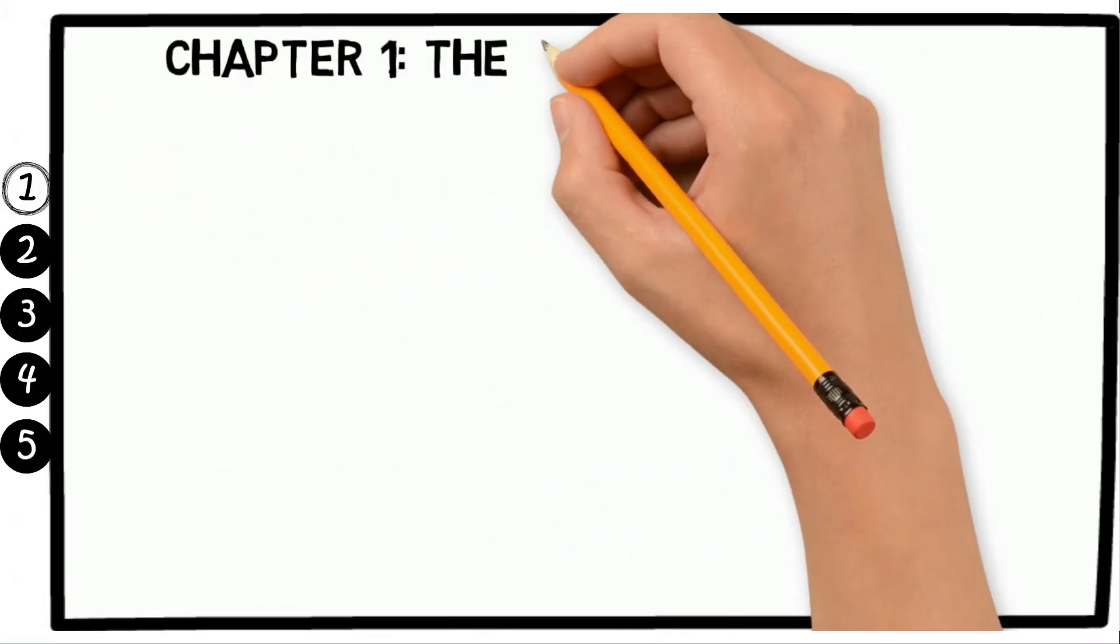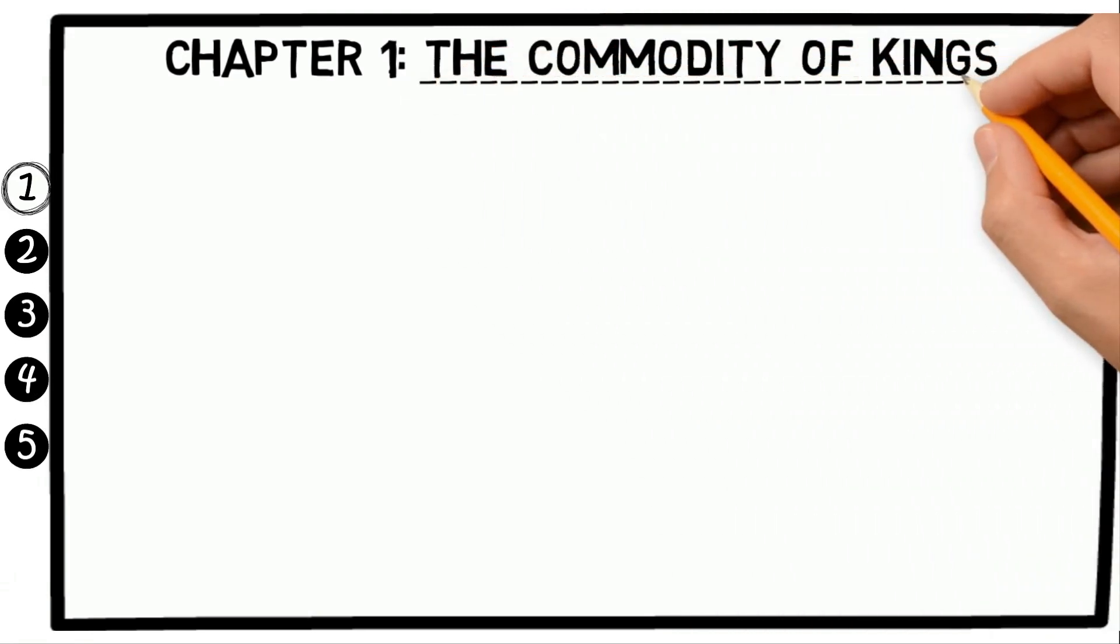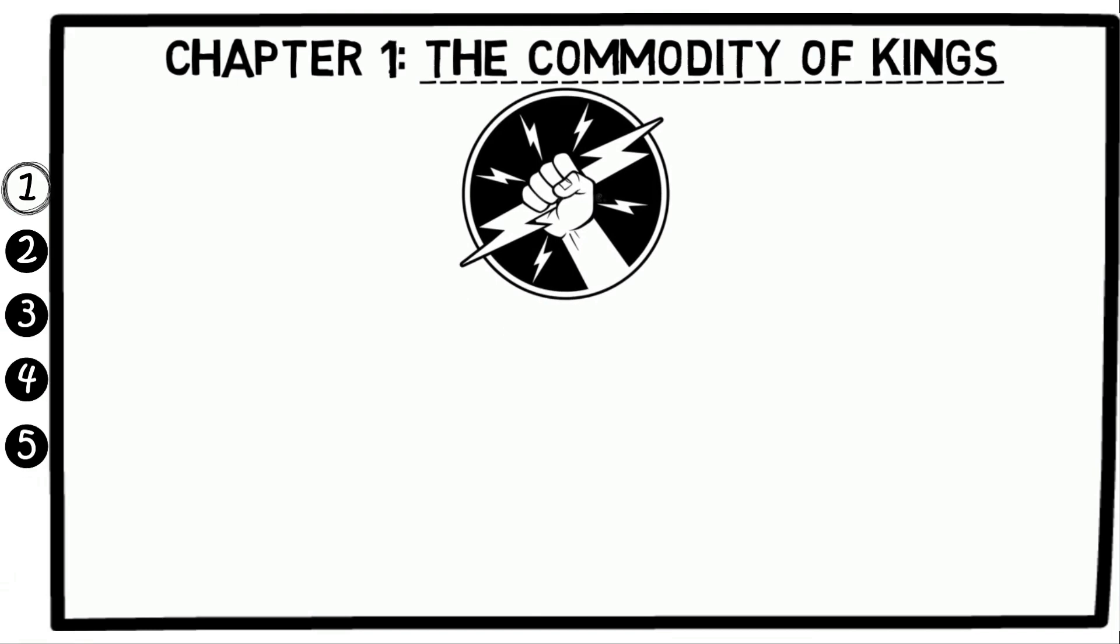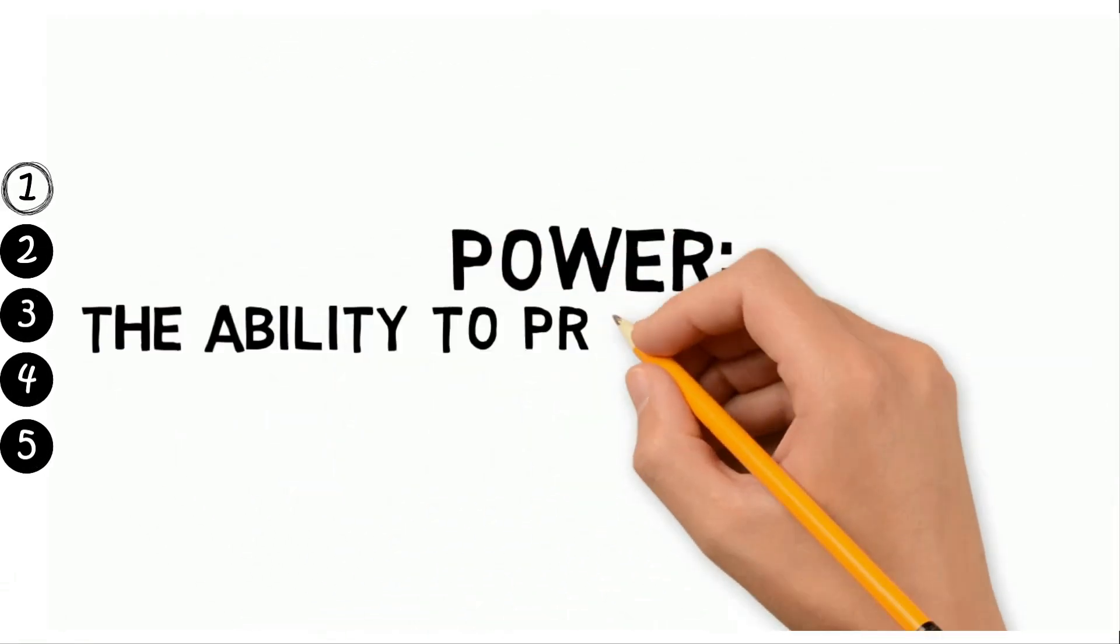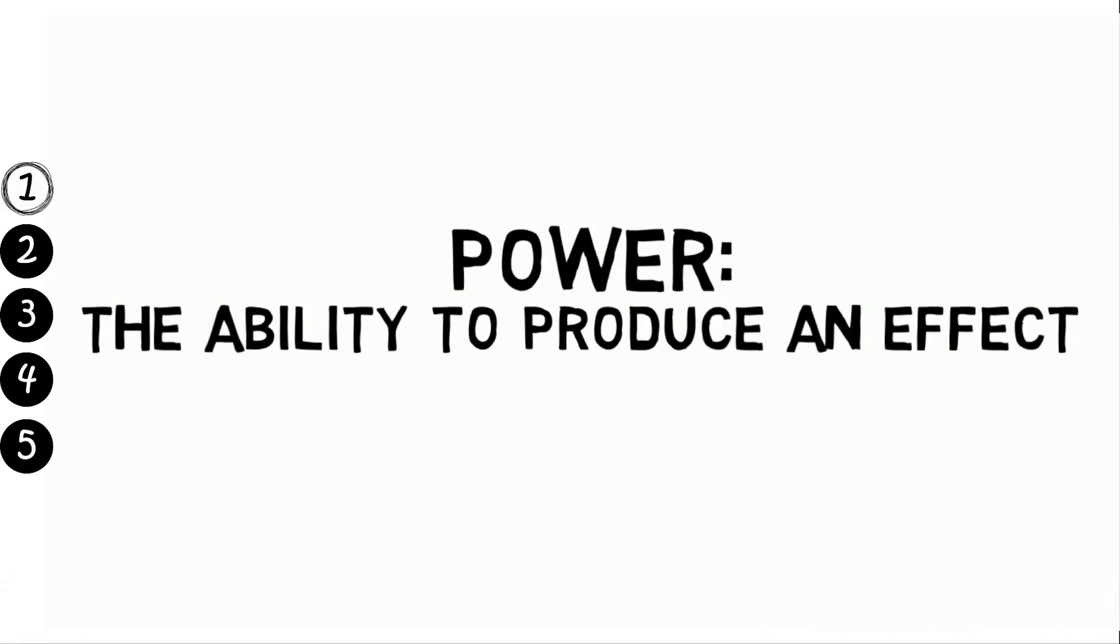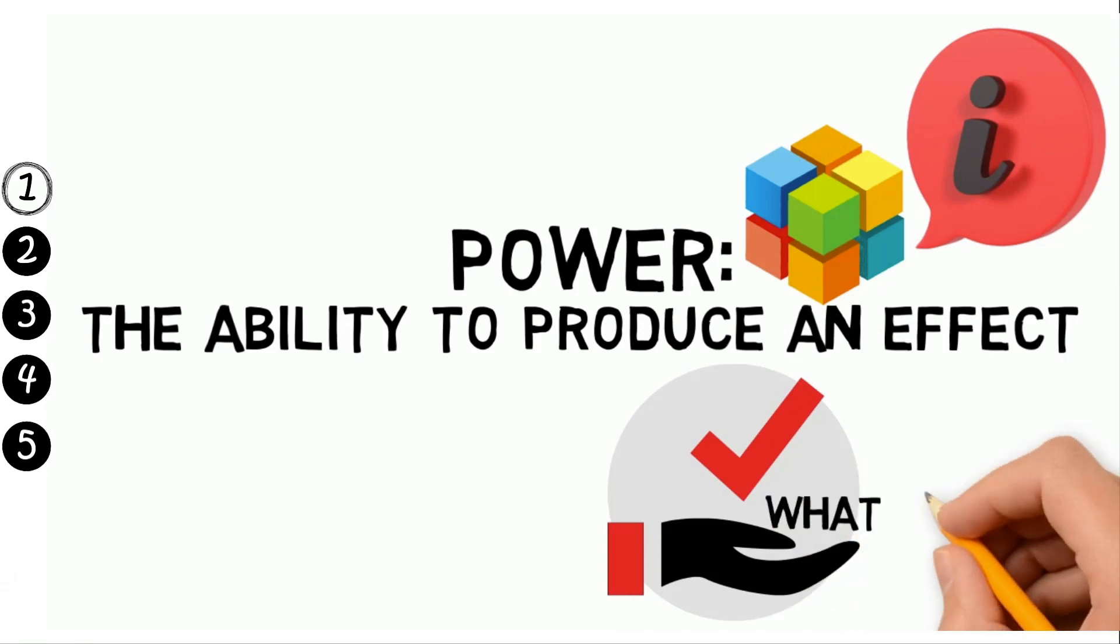Chapter 1: The Commodity of Kings. The Commodity of Kings discusses the importance of having power. He defines power as the ability to produce an effect. Robbins argues that power is the most important commodity in the world because it's what allows us to get what we want.